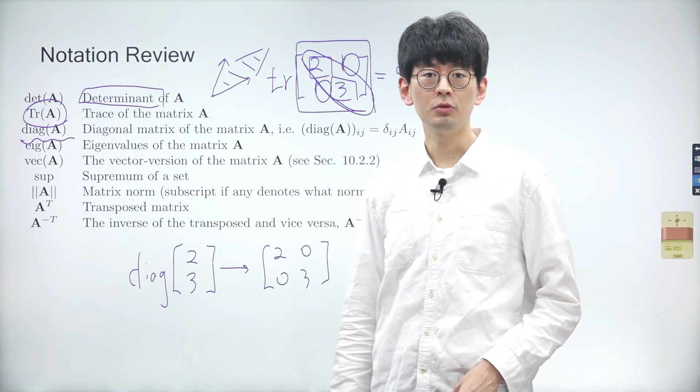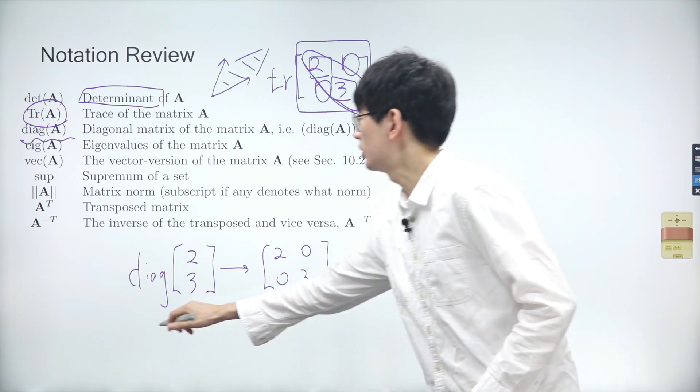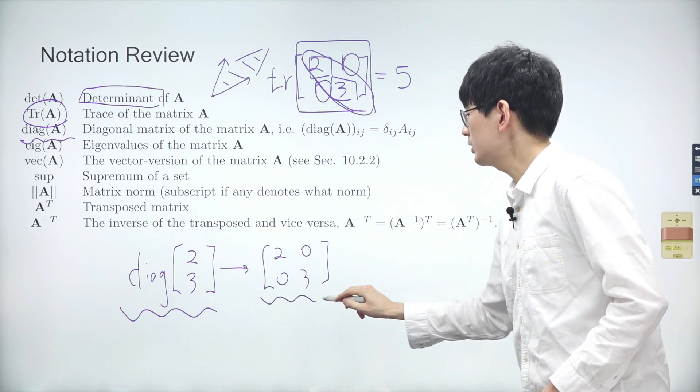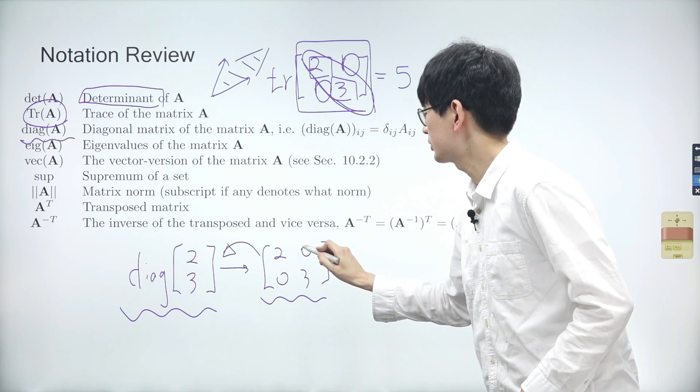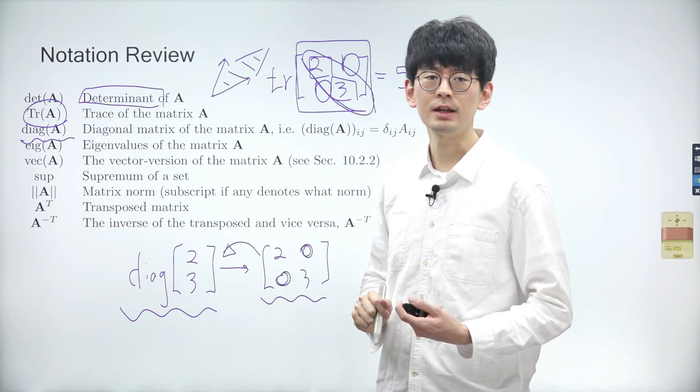A diagonal operator sometimes involves transferring a vector into a matrix or, in other cases, transferring a matrix into a vector leaving only the diagonal elements. It really depends on the context in which it is being used.